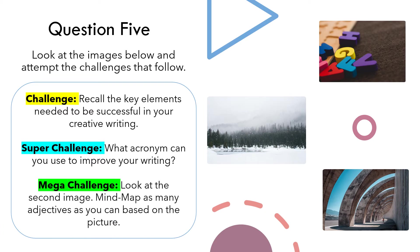In the challenge, look at the second image — that snowy, frosty landscape — and mind-map as many adjectives as you can based on that picture. This is a really good starting point when faced with any image for question 5. It helps your mind start thinking about what kind of environment you're faced with and how you can use description to create a vivid image for the reader.